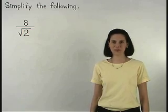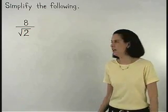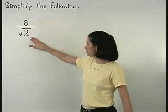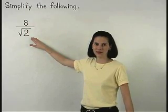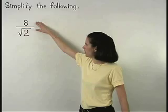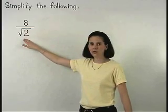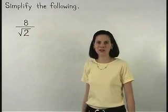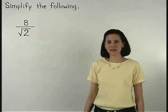In this example, the temptation is to divide 8 by 2 right away. But notice that the 8 is not inside a radical, and the 2 is inside a radical, so we cannot divide these numbers.